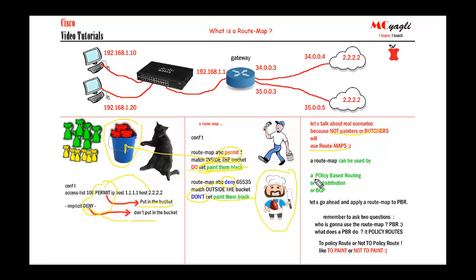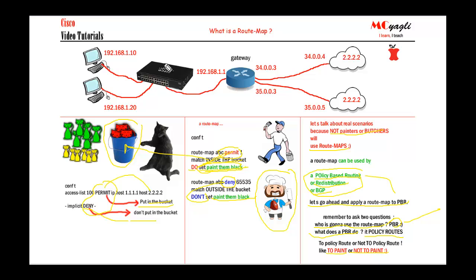Now let's talk about some real scenarios, because painters and butchers won't actually use route maps. Route maps can be used by policy-based routing, redistribution, or BGP. Let's apply a route map to PBR — policy-based routing. Remember to ask these two questions: who is going to use the route map? PBR. And what does PBR do? It policy-routes.